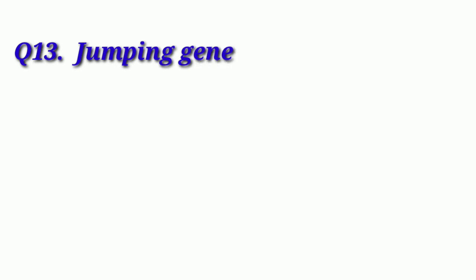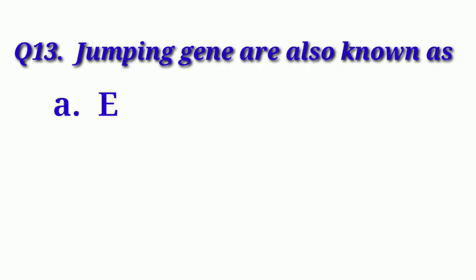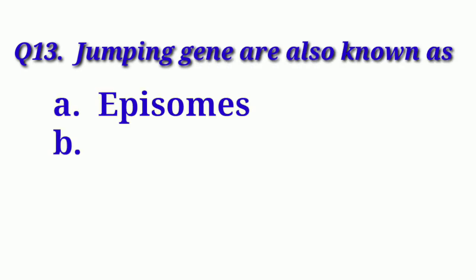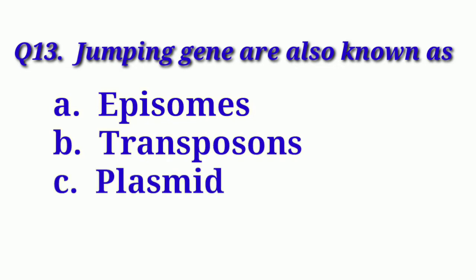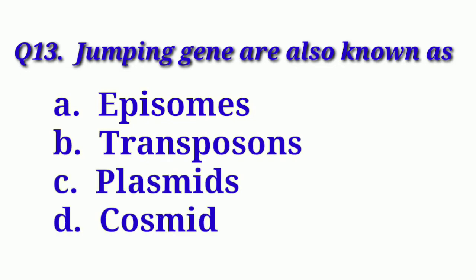Our next question is: Jumping genes are also known as. Option A: Episomes. Option B: Transposons. Option C: Plasmids. And Option D: Cosmids. We know transposable elements, also known as jumping genes, are DNA sequences that move from one location on the genome to another.